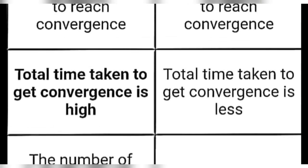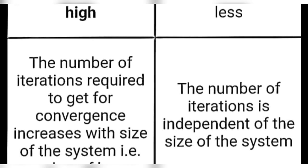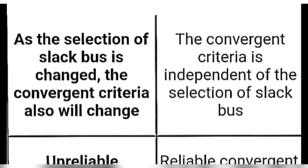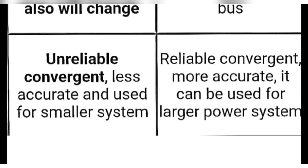Total time taken to get convergence is higher in Gauss-Seidel method, while Newton-Raphson method total time taken to get convergence is less. In Gauss-Seidel method, the number of iterations required for convergence increases with the size of the system, i.e., number of buses. In Newton-Raphson method, the number of iterations is independent of the size of the system. In Gauss-Seidel method, as the selection of slack bus is changed, the convergence criteria also changes. In Newton-Raphson method, the convergence criteria is independent of the selection of slack bus. Gauss-Seidel method is unreliable in convergence, less accurate, and used for smaller systems. Newton-Raphson method has reliable convergence, is more accurate, and can be used for larger power systems.